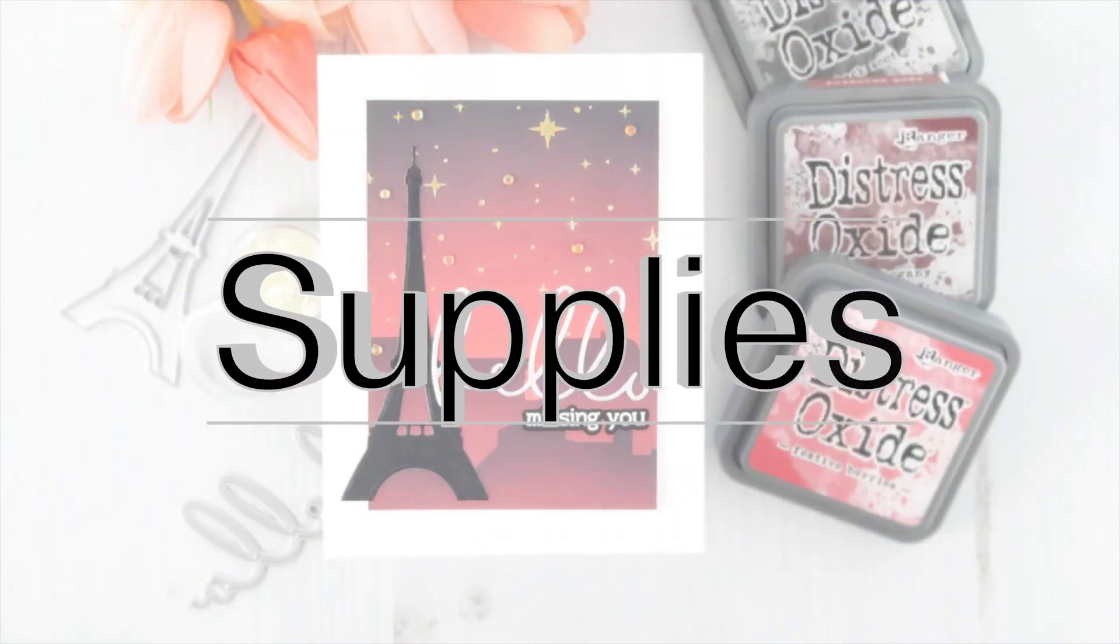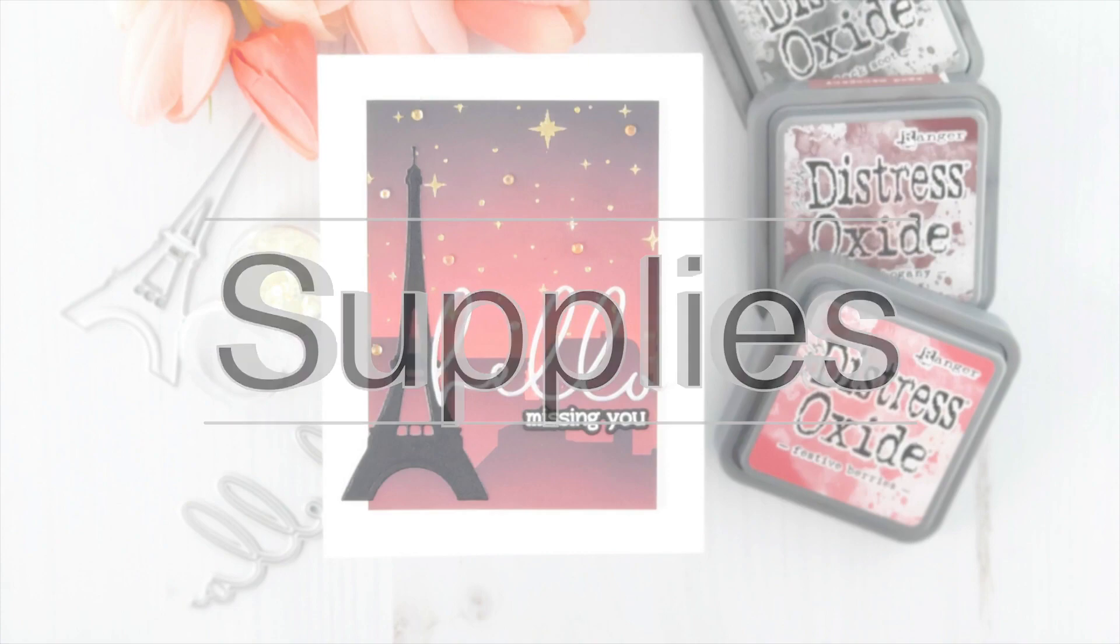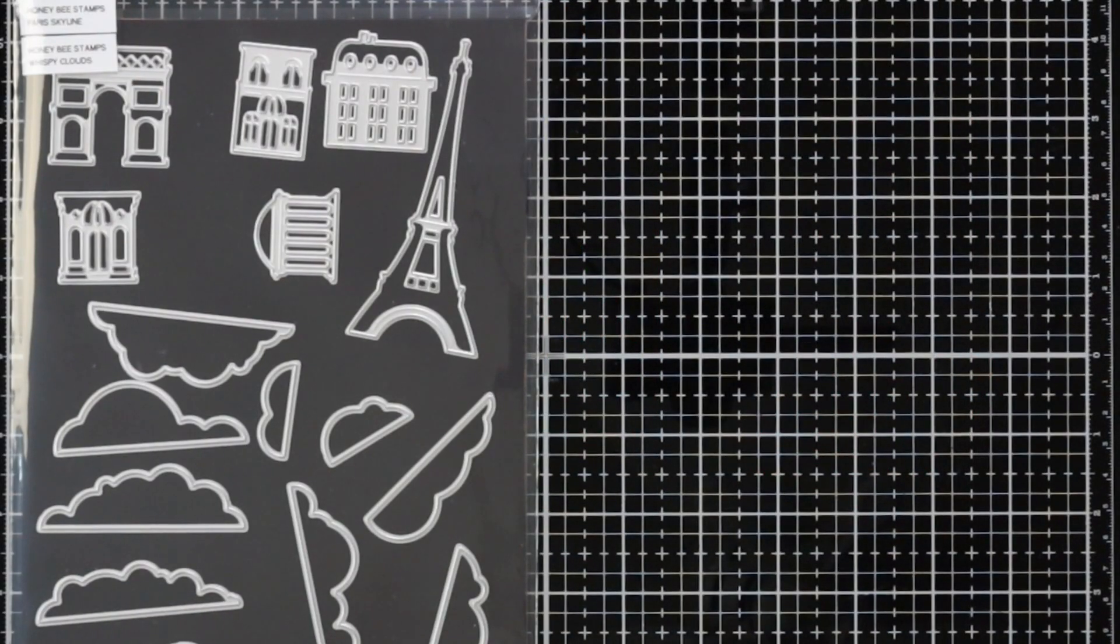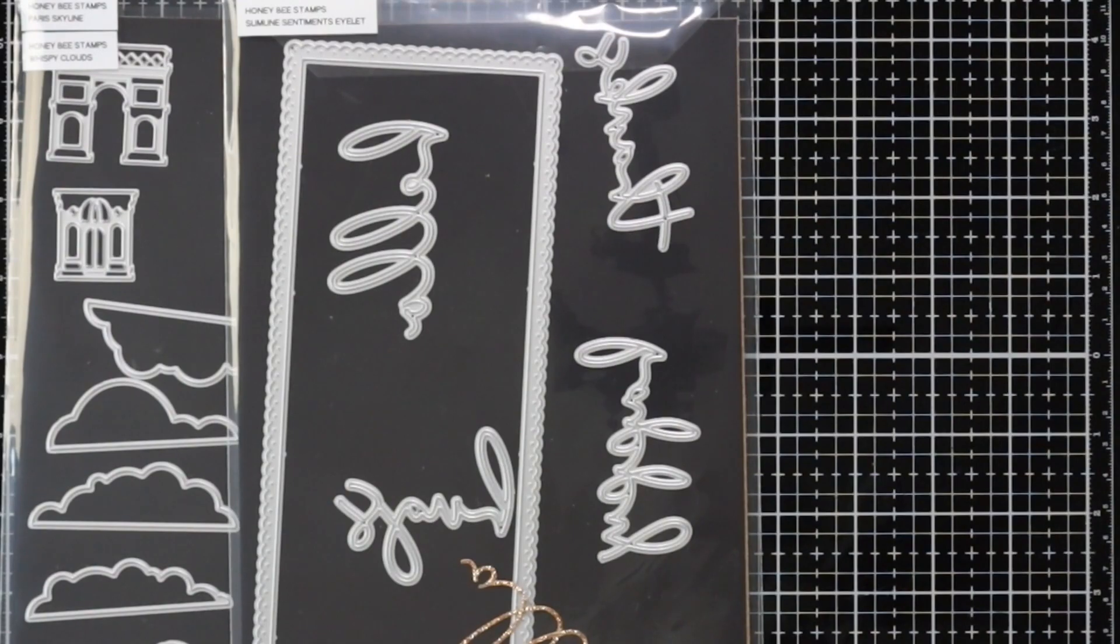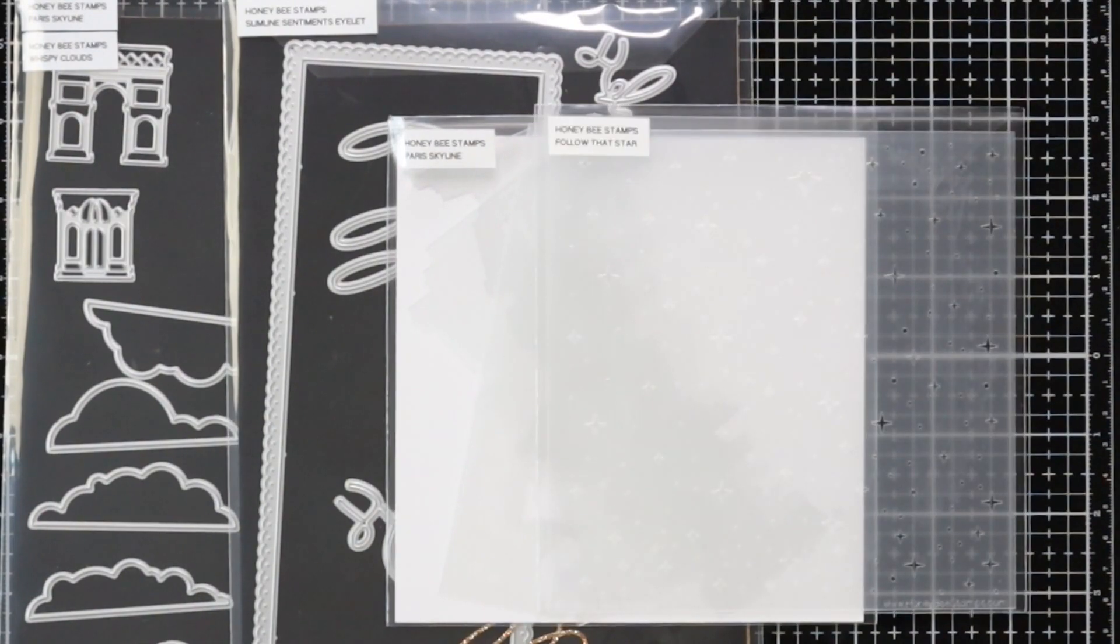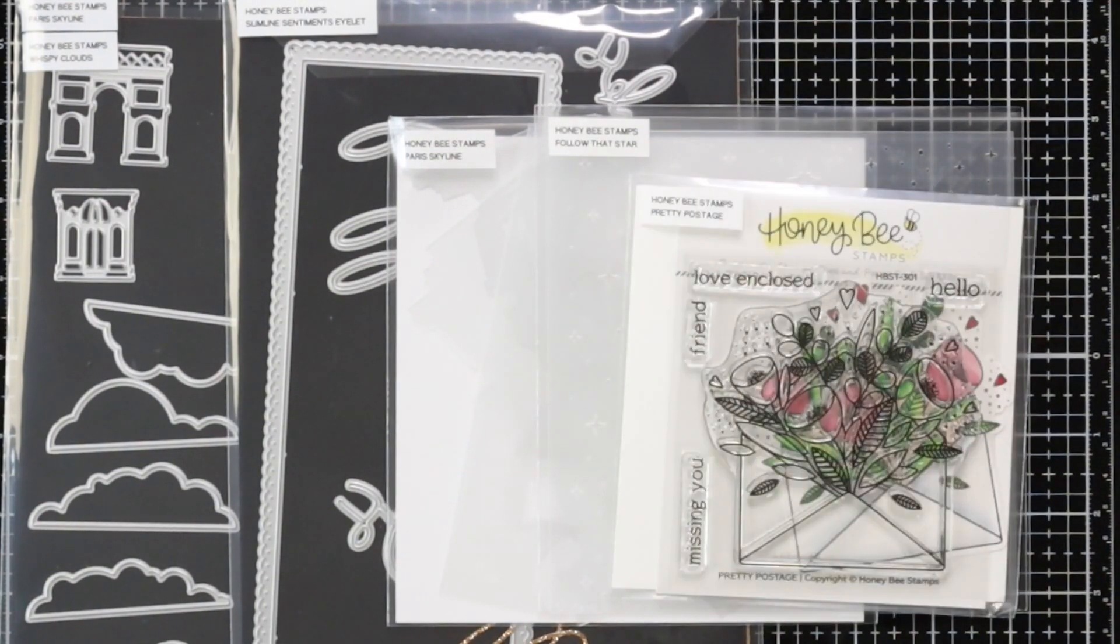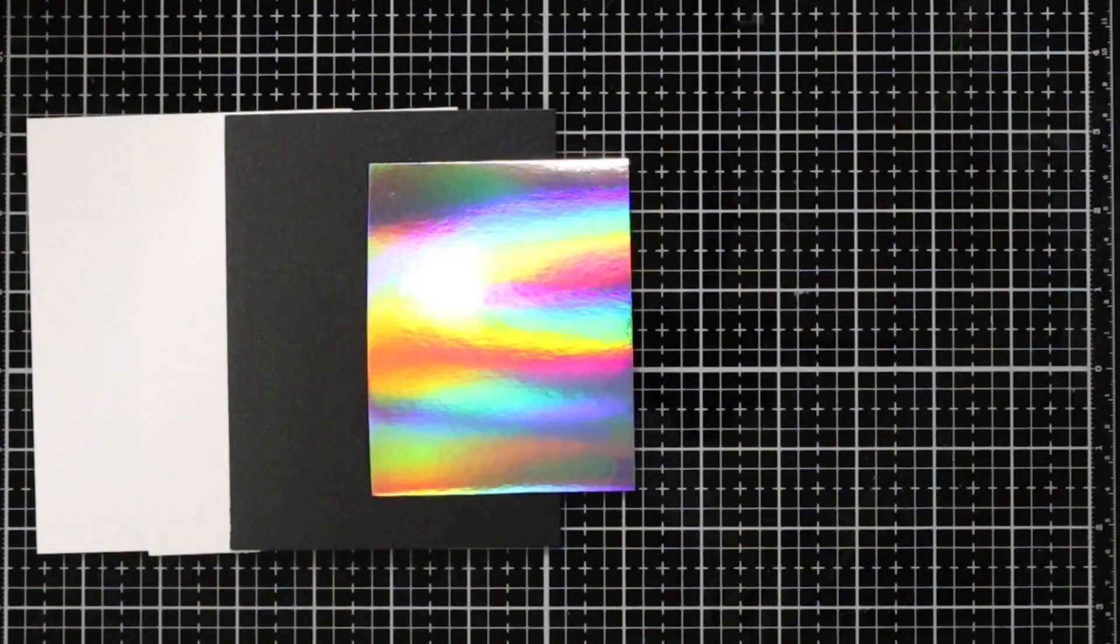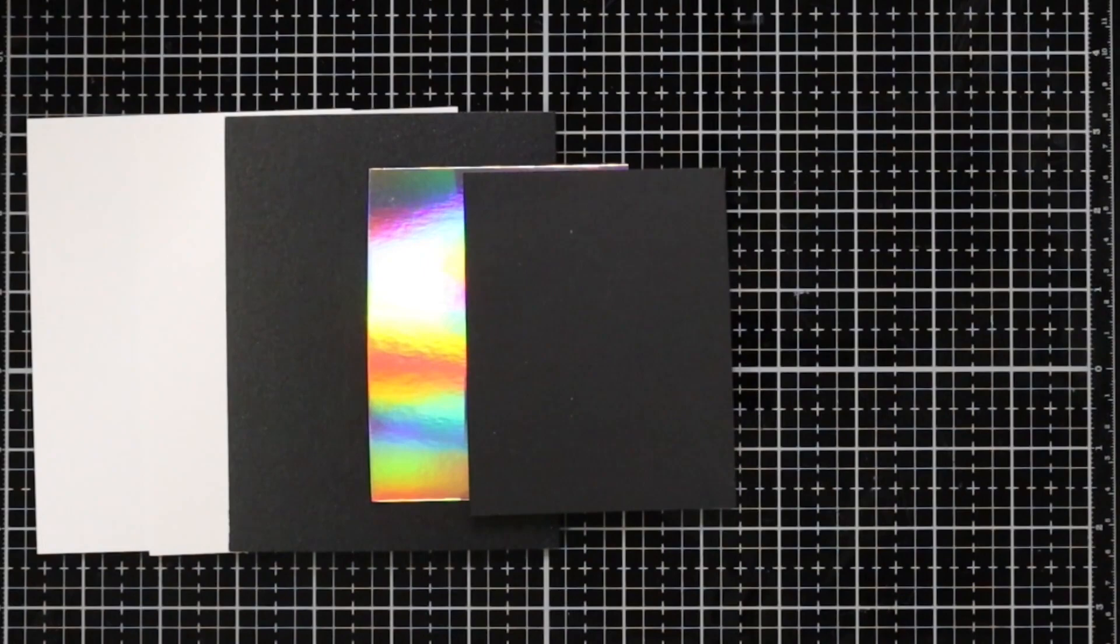Before we get started I want to show you the supplies that I'll be using in today's video starting with the Paris Skyline die set. I'm using the hello from the slimline sentiments, I have the Paris Skyline stencil, follow that star stencil, and pretty postage stamp set where I'll be using a sentiment from. I also have some white cardstock, pearlescent black cardstock, holographic, and also some plain black cardstock.